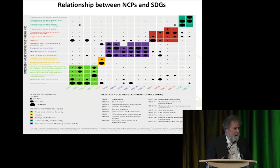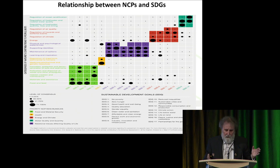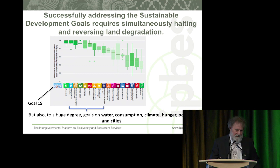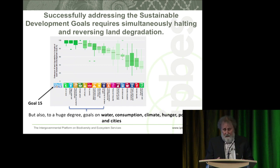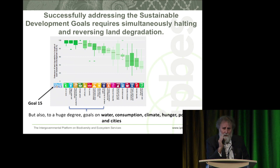We looked at how nature's contributions for people affect different Sustainable Development Goals — blocked into food security, social infrastructure, etc. We also looked at land degradation: if you want to maintain biodiversity, you have to get rid of land degradation. We looked at the implications of land degradation on all of the Sustainable Development Goals. Our view was that literally all of them are very vulnerable to land degradation.